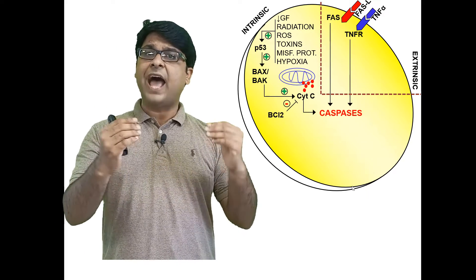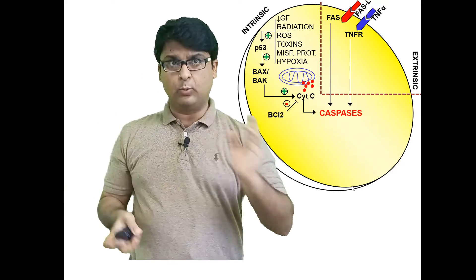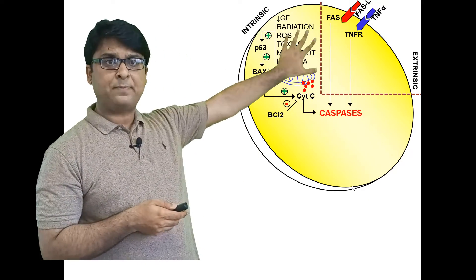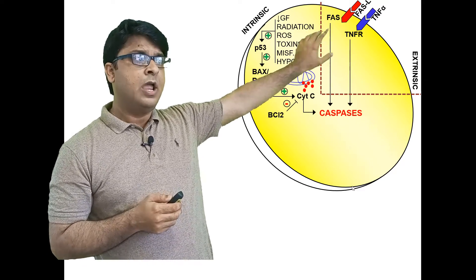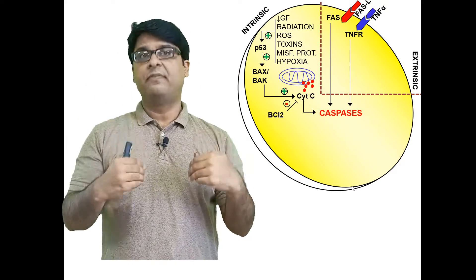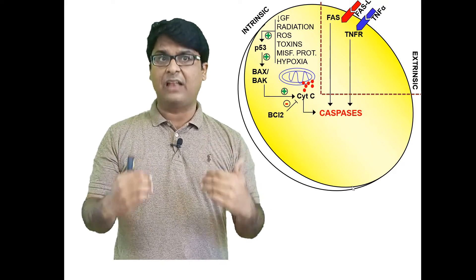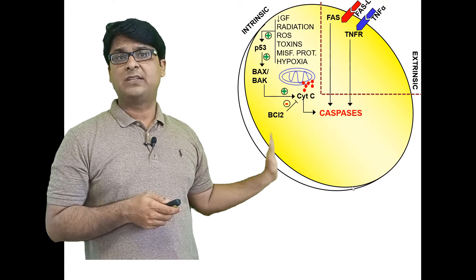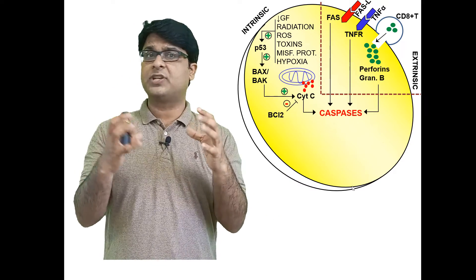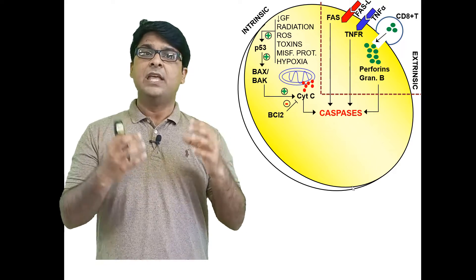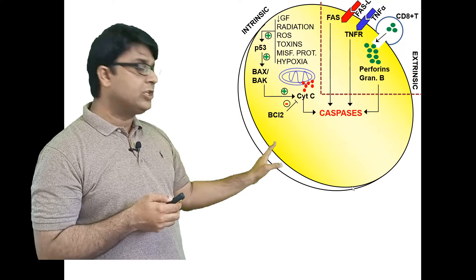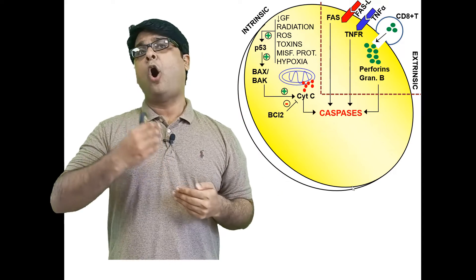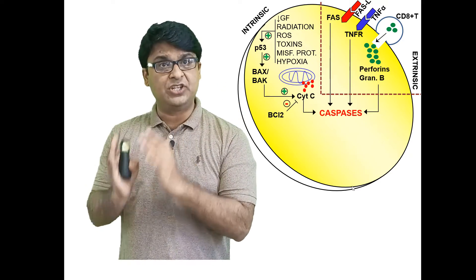In the extrinsic pathway, there is either a ligand-receptor interaction or involvement of an immune cell. Almost all cells have FAS receptor and TNFR (tumor necrosis factor receptor). When FAS ligand and TNF-alpha bind these receptors, the cells undergo apoptosis because that interaction induces caspase activation. Alternatively, if there is an infected cell, cytotoxic T cells (CD8-positive) identify it, release perforins and granzyme B, and that also leads to caspase activation.